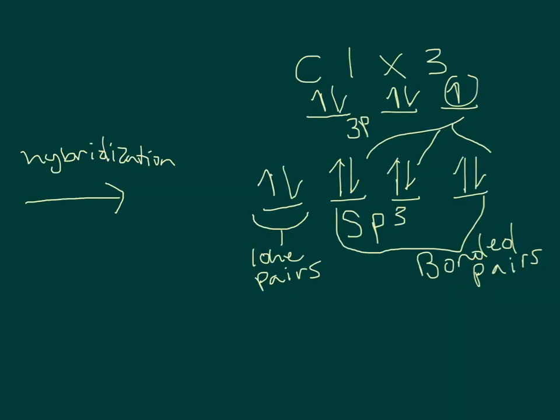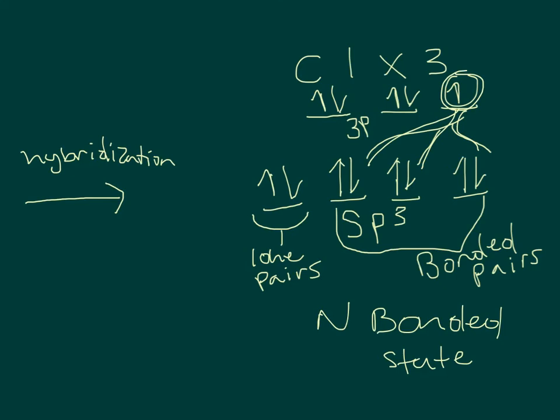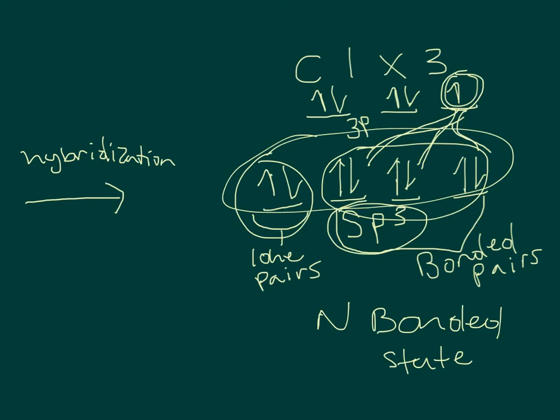Here we have now drawn nitrogen in its bonded state. Notice that the chlorine lone valence electron filled in the sp3 orbital, making them all full. Since we had a tetrahedral electron geometry, it is an sp3 orbital. The bond pairs being these three here, and we end up with one lone pair, as we had shown previously on the Lewis dot structure.